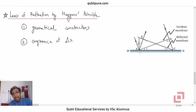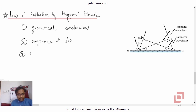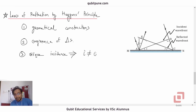Let me sketch the outline of the proof for angle of incidence equals angle of reflection. AB is our incident wavefront and we consider an oblique incidence, meaning the angle of incidence will not be zero.